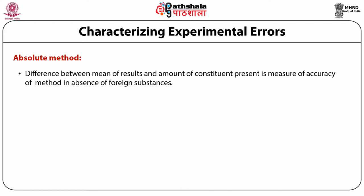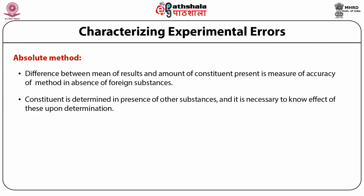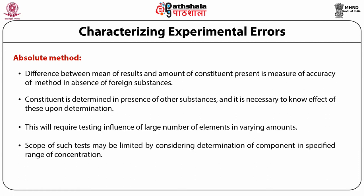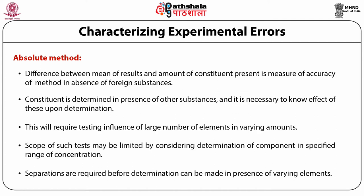The constituent will usually have to be determined in the presence of other substances, so it is necessary to know the effect of these upon the determination. This requires testing the influence of a large number of elements each in varying amounts. The scope of such tests may be limited by considering the determination of a component in a specified range of concentration in a material whose composition is more or less known. In practice, separations will often be required before determination can be made, and the accuracy of the method is largely controlled by the separations involved.